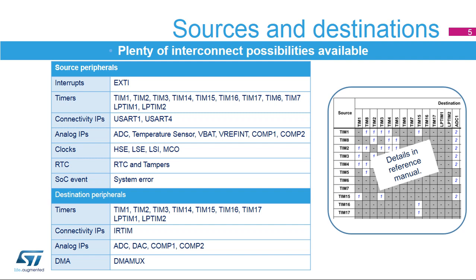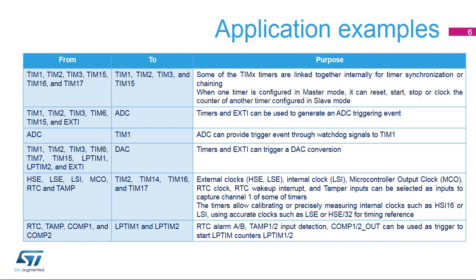The interconnect matrix is further described in the STM32G0 reference manual. This slide and the next one describe the various possible uses for the interconnect matrix. One use is synchronizing or chaining timers — for example, allowing a master timer to reset or trigger a second slave timer.